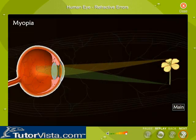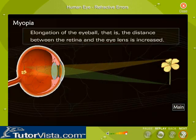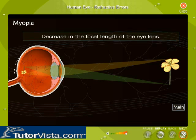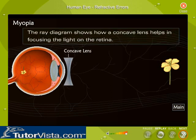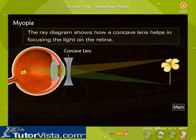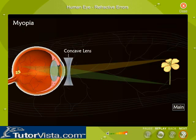Myopia is caused due to elongation of the eyeball — that is, the distance between the retina and the eye lens is increased — or a decrease in the focal length of the eye lens. A concave lens is used to rectify this optic abnormality. The ray diagram shows how a concave lens helps in focusing the light on the retina. This defect is commonly known as near-sightedness.